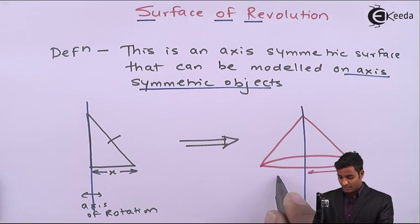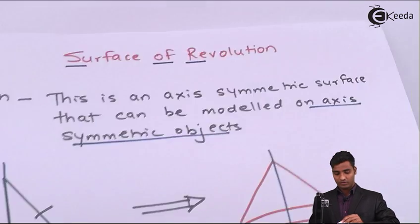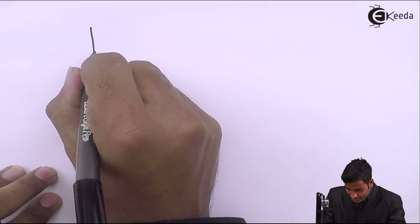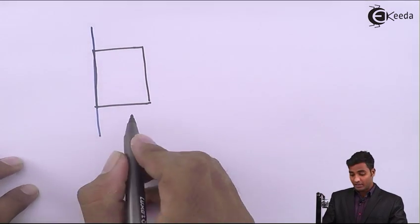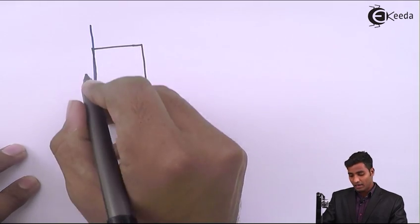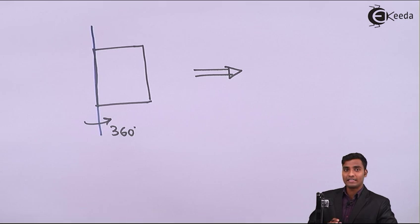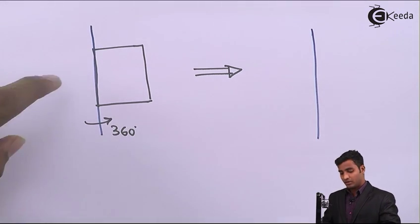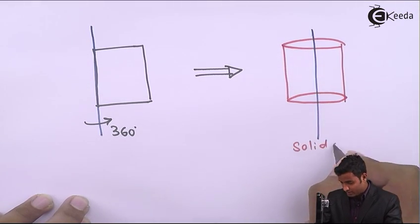Initially it was x, now it is converted into 2x. We can take one more example of a rectangle. First I will draw the axis of rotation, then draw the rectangle lying on this axis of rotation. After revolving this rectangle about the axis of rotation by 360 degrees, a solid cylinder is generated.